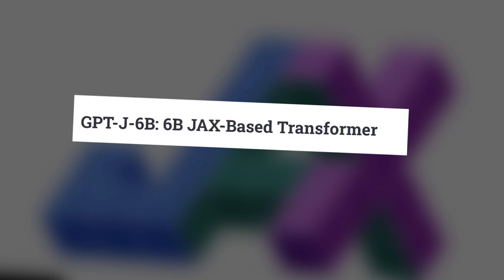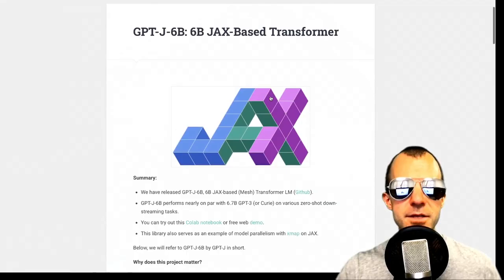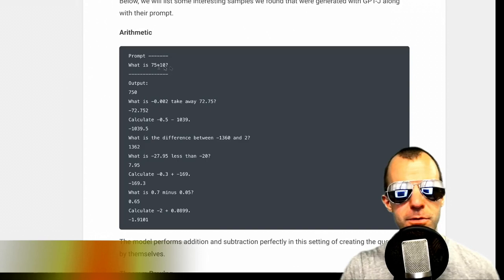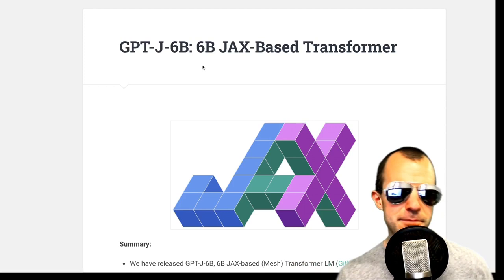Next: Ben Wang and Aron Komatsuzaki of EleutherAI release GPT-J, a 6 billion parameter JAX-based transformer model. This is not quite GPT-3 yet, but it's a pretty big model. From the samples, it can do a bit of math, theorem proving, NLU, generate some code, and give you interesting facts about geese. GPT-3 is 175 billion parameters; this is 6 billion, so it's not entirely on the same scale.